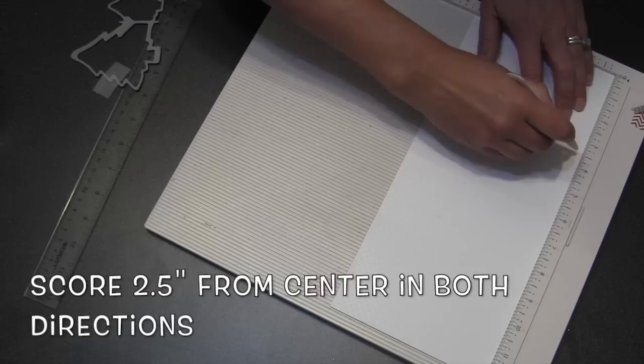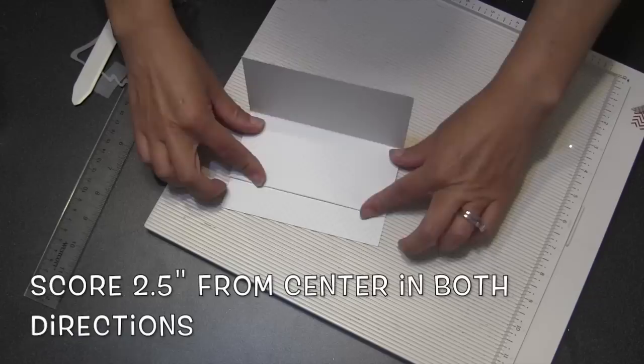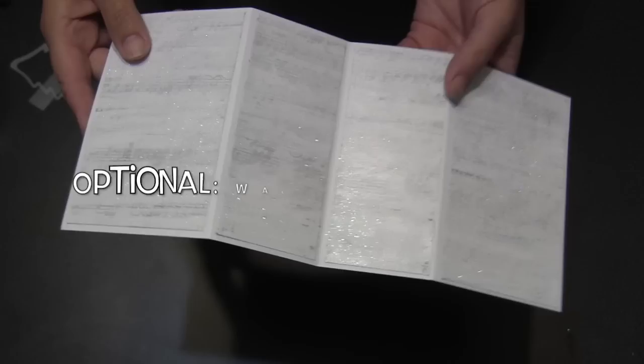So now I just have to put those two score lines into the strip. I'm going to start at the center line, I'm going to count out two and a half inches off the center and score in that direction, then I'm going to count two and a half inches off the center in the opposite direction and score there as well. And then now it's just a matter of finding those folds and folding it like an accordion, which means a valley, then a mountain, and then another valley fold.